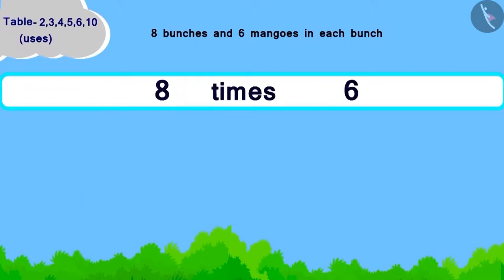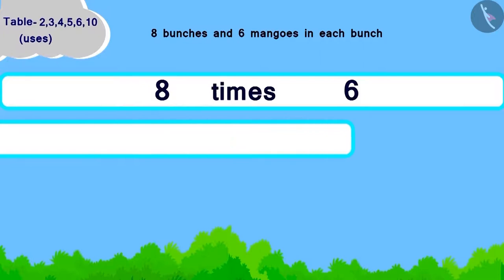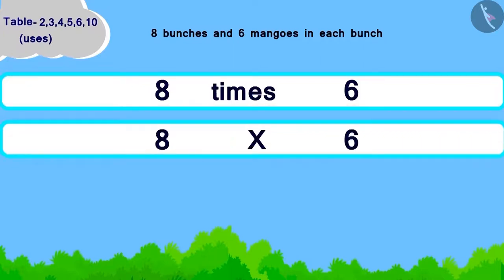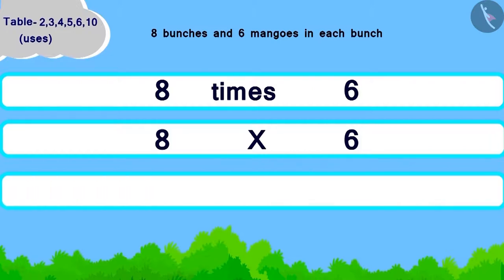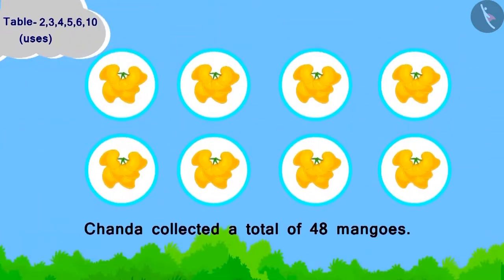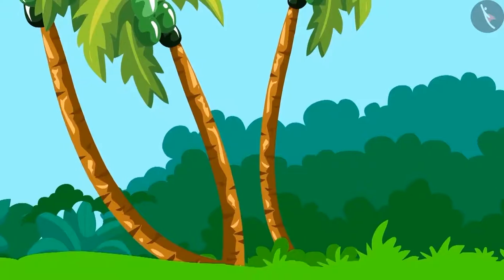Eight times six. How will we write it as multiplication? Eight multiplied by six. Now, using the table of six, they become forty-eight. Chanda collected a total of forty-eight mangoes.